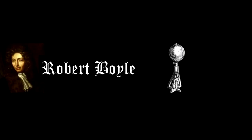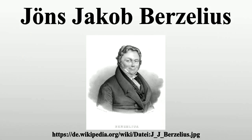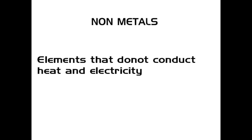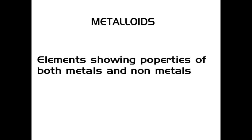To summarize: Robert Boyle, Berzelius, and Lavoisier. Robert Boyle defined the element. Elements represent symbols. Metals and non-metals classify the elements. Metals conduct electricity and heat and lose electrons during chemical reactions. Non-metals do not conduct heat and electricity and accept electrons. Metalloids show both the properties of metals and non-metals.